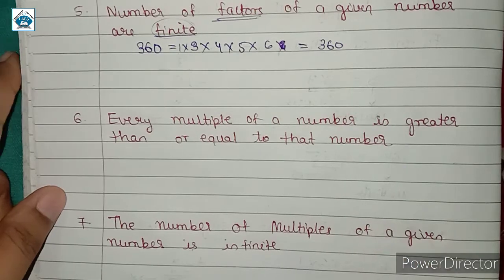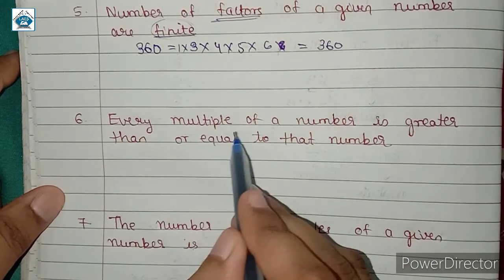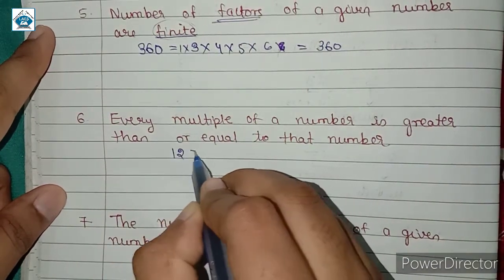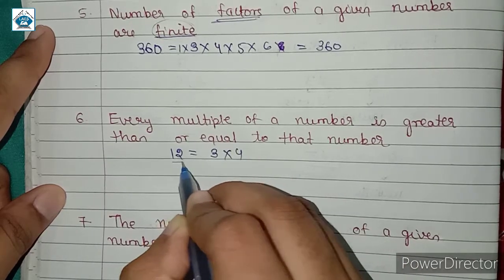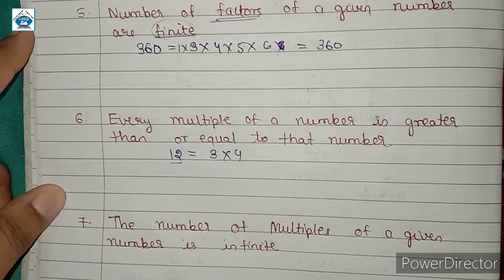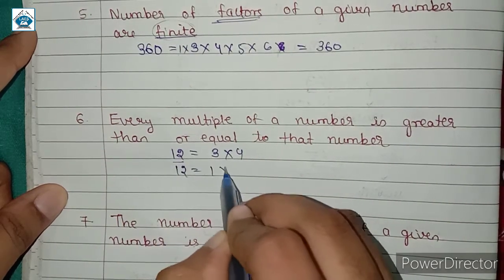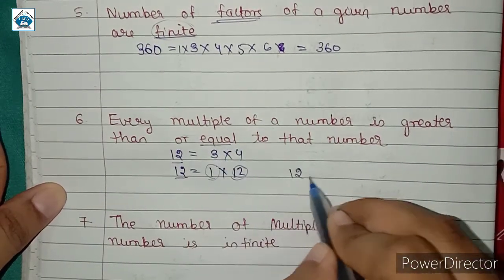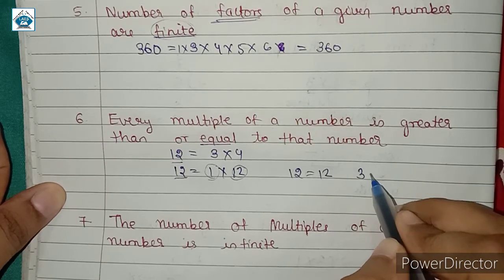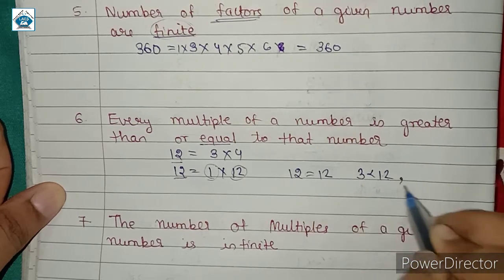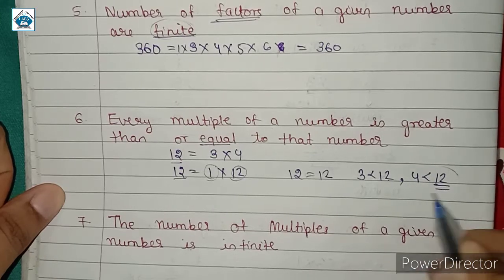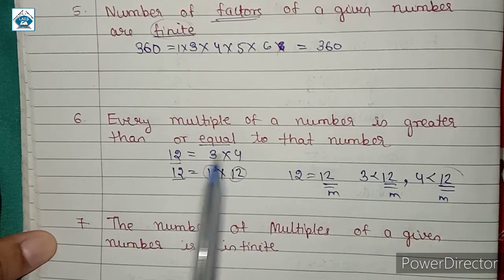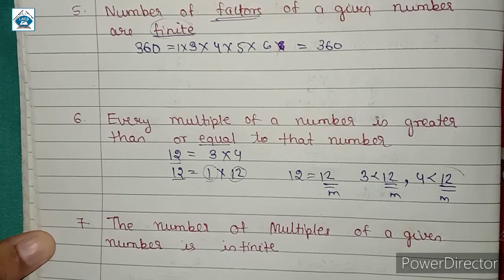Next: every multiple of a number is greater than or equal to that number. For factors it was less than or equal to, but for multiples it is the exact opposite. For example, 12 is a multiple of both 3 and 4. We can write 12 = 1 × 12, so 12 is a multiple of 1 and equal to 12. And since 3 and 4 are less than 12, the multiple 12 is greater than them. So every multiple is greater than or equal to that number.